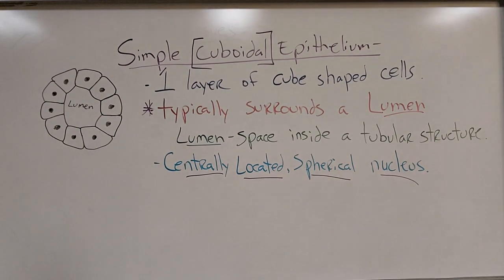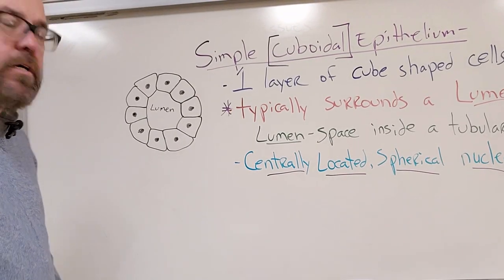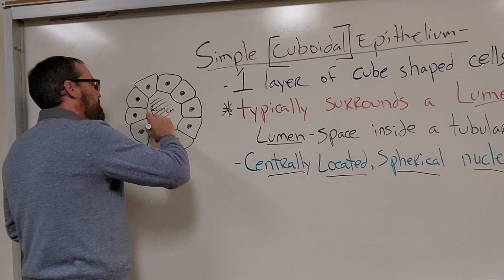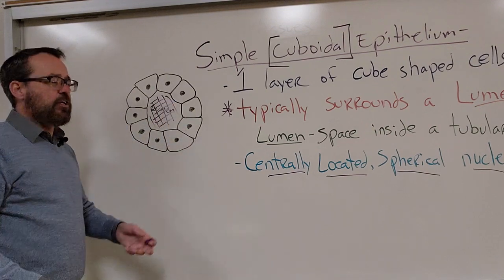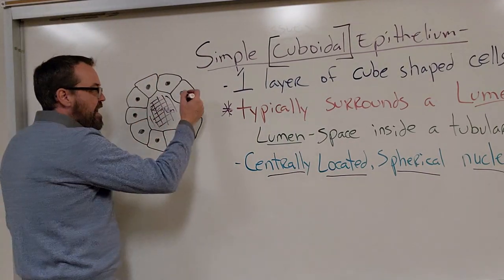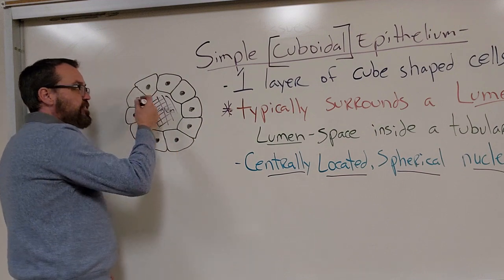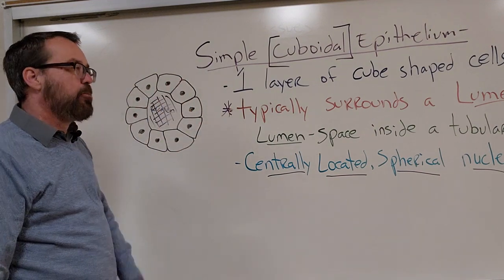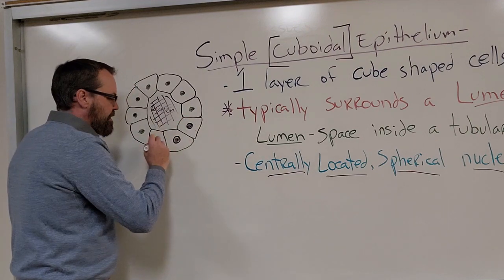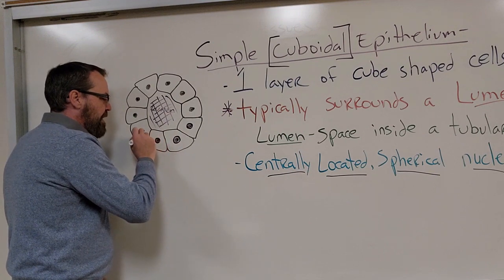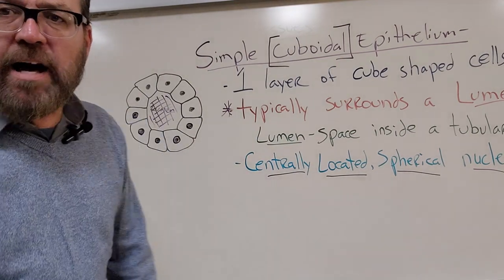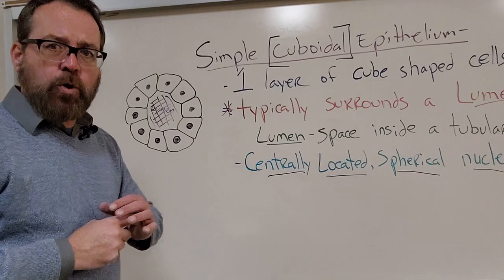Here's my lumen in the middle — the opening inside of a tubular structure. This could be part of a blood vessel, your intestines, or anything with that open space. We come around that and can see one layer of cube-shaped cells all the way around — that's why this is simple cuboidal. And right in the middle I have this nice round, centrally located spherical nucleus. Easy one to spot — simple cuboidal.